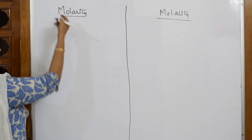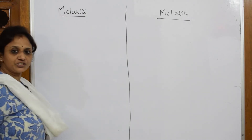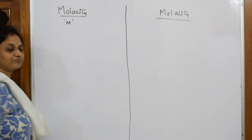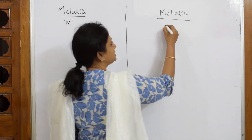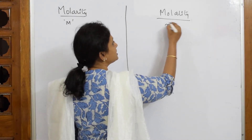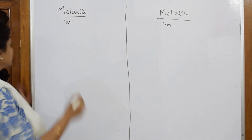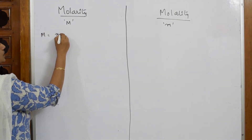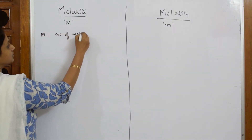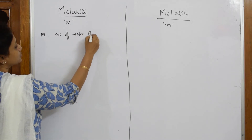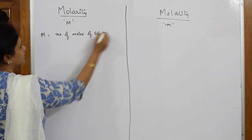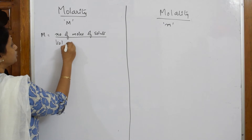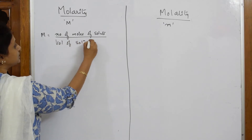Molarity is one more concentration unit, and it is denoted by capital M. Molality is denoted by small m. Capital M — molarity — is equal to the number of moles of solute divided by the volume of solution in liters.